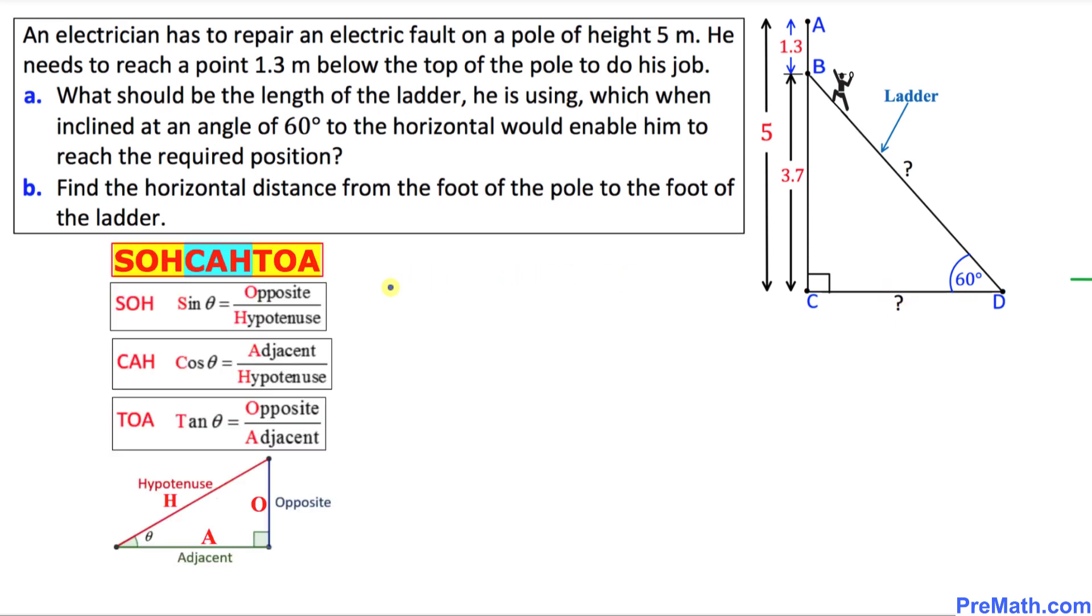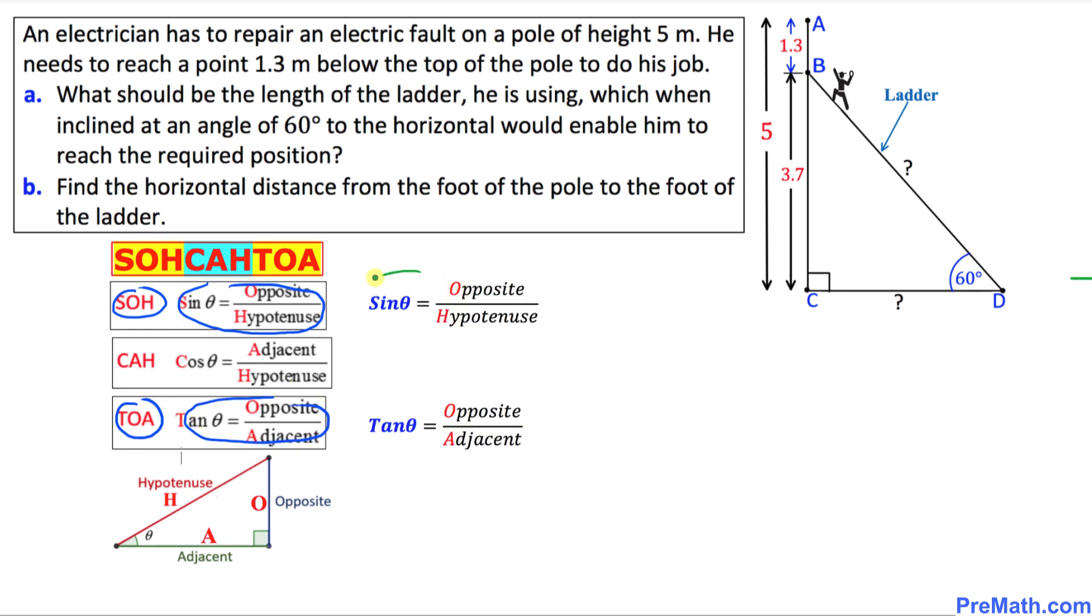Before we start working with the calculation, let's go over the basic SOH CAH TOA chart. Here you can see SOH means sine equal to opposite over hypotenuse. And likewise, TOA means tangent equal to opposite over adjacent. Just keep in your mind that we need these two ratios in order to work on our given problem.